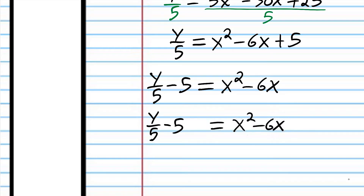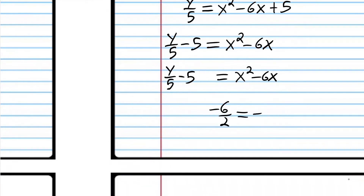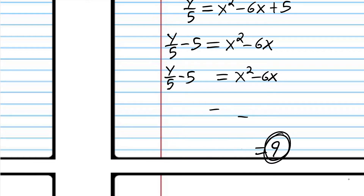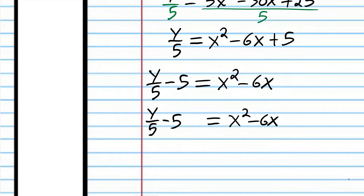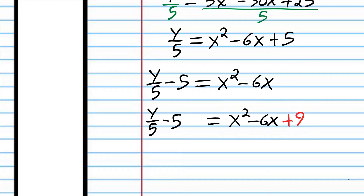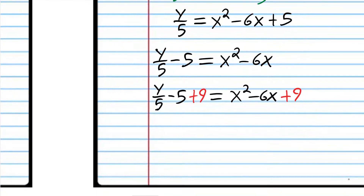To complete the square, we need to add a number to both sides. We take the coefficient of x, divide it by 2: negative 6 divided by 2 equals negative 3. Then we square that number: negative 3 squared is 9. That's the number we need — 9. So I'm adding 9 to this expression, making it a perfect square. But we can't just add 9 to one side — we have to add 9 to the other side also.